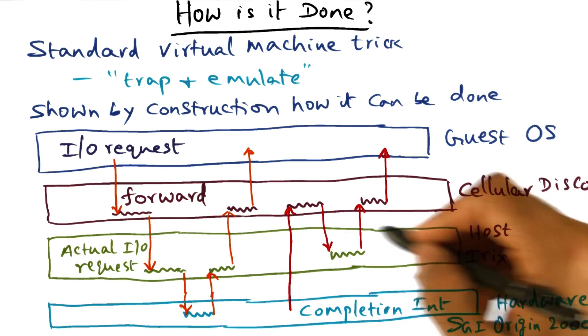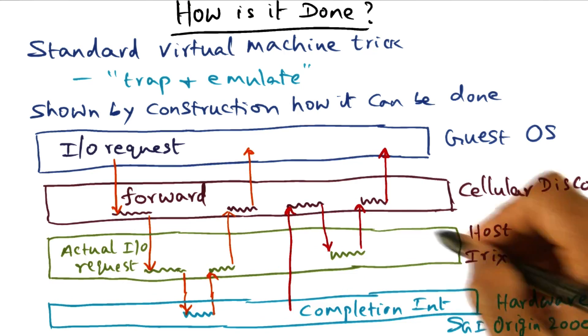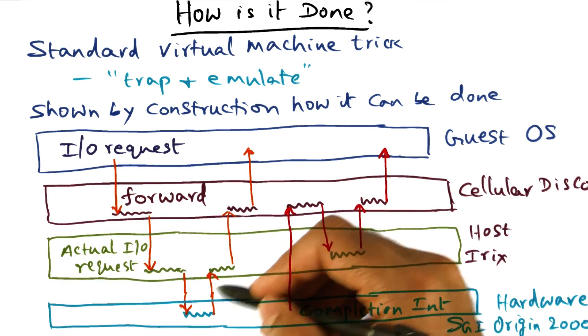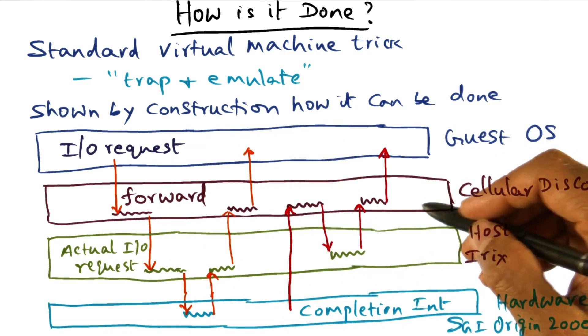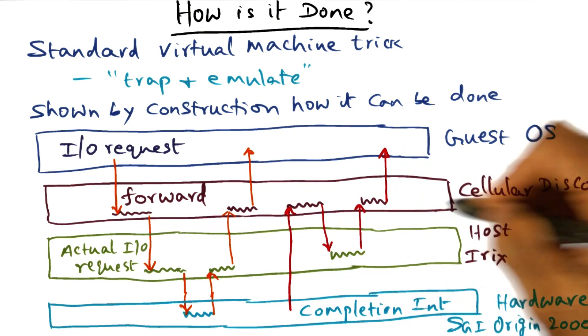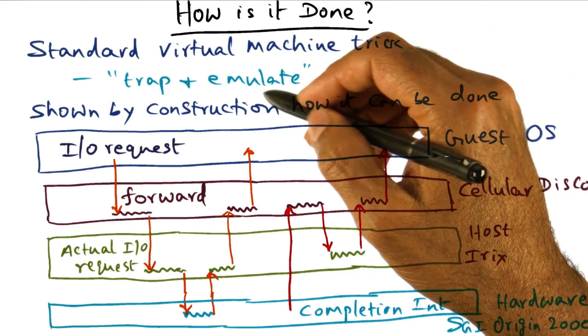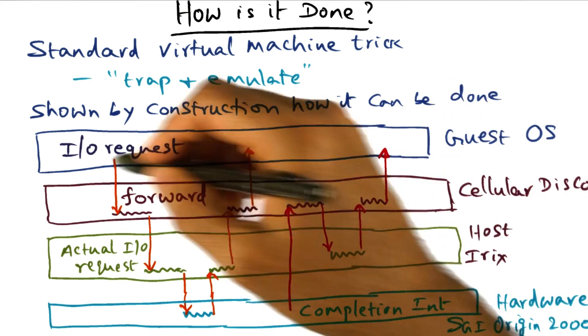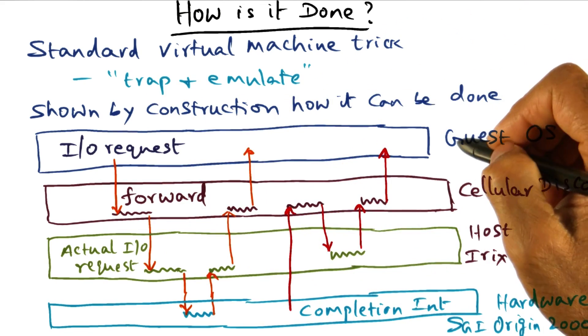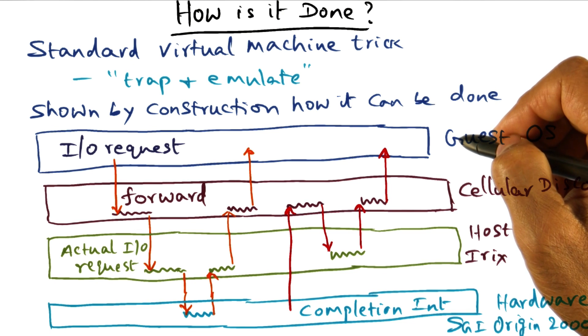This is the trick by which it does the trap and emulate for dealing with every I/O subsystem. There's no need to change any part of the I/O subsystem in the host operating system. Everything is being managed by this trick of trap and emulate happening in the Cellular Disco layer.